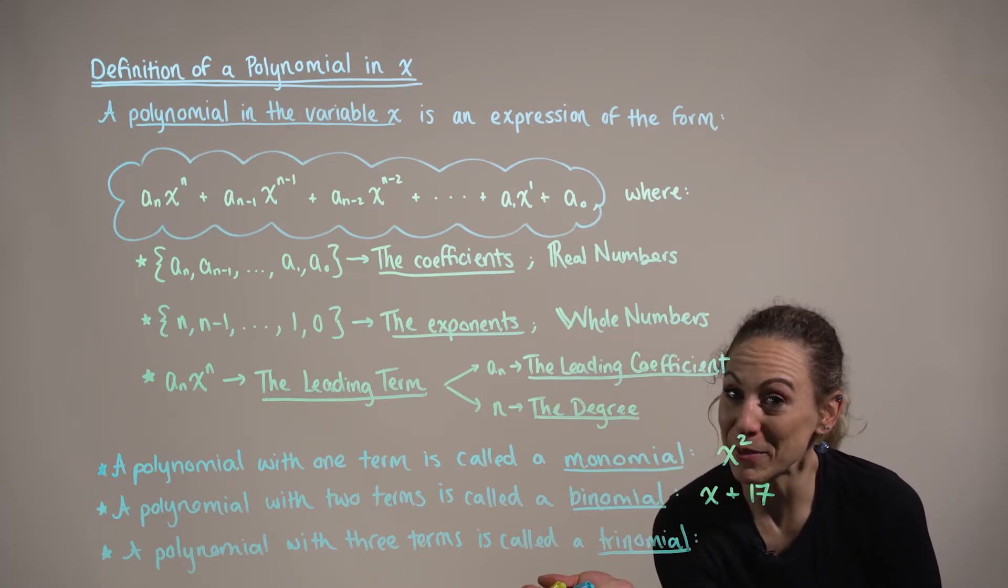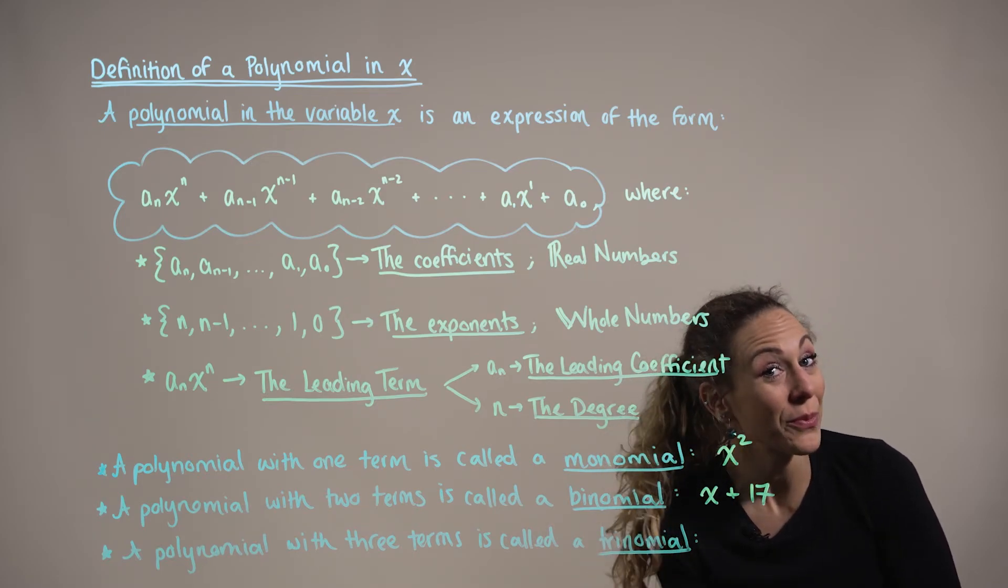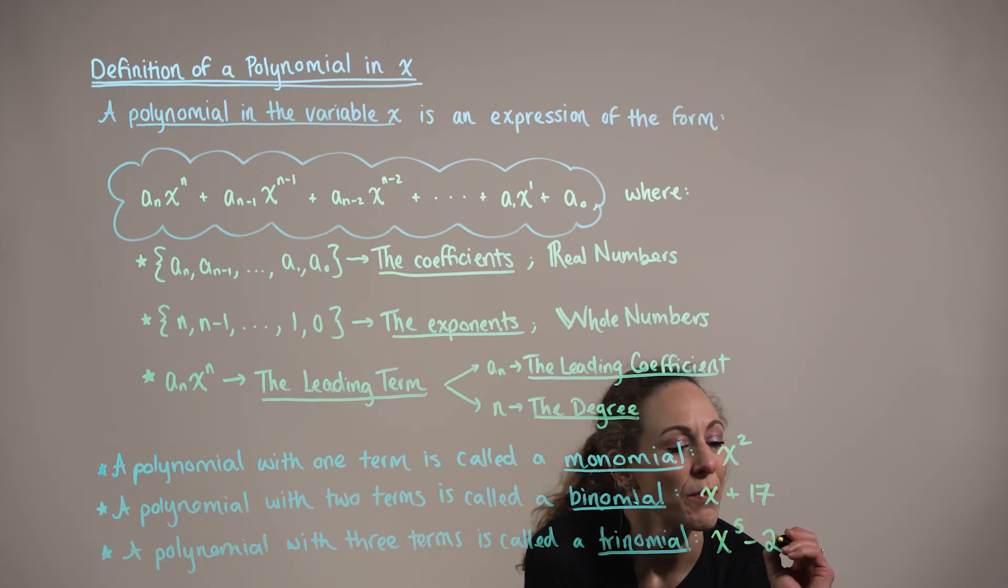Another common terminology we want to be mindful of is a trinomial, or a polynomial with three terms, something like x to the fifth minus 2x squared plus x.